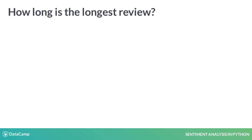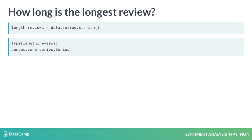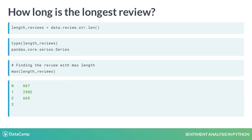How long is the longest review? To find that, we create a pandas Series called length_reviews by selecting the review column of the dataset, followed by .str.len(). str is short for string. We need to call the string function to transform the Series of reviews to a string — if we skip it, we get an AttributeError when the len() function is called. The result returns a pandas Series with the number of characters in each review. To find the length of the longest review, we call the max() function on the length_reviews Series.